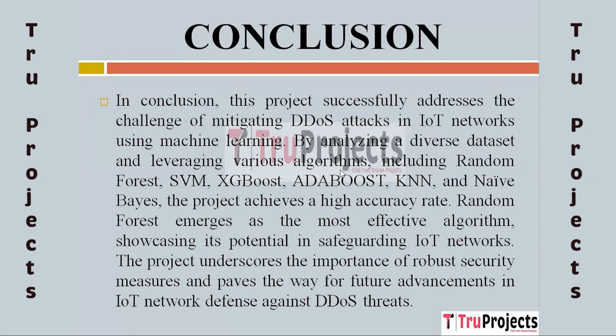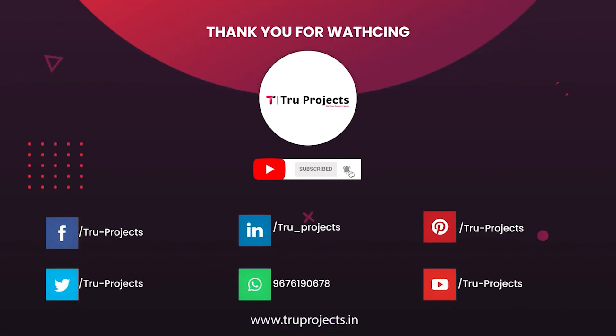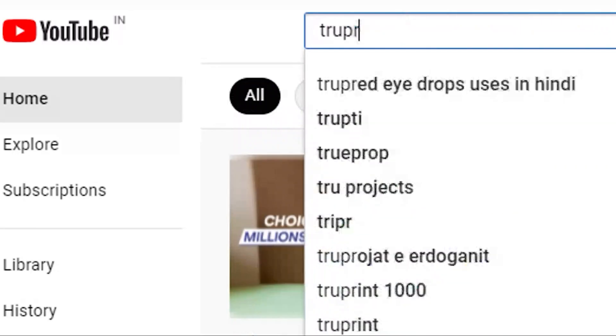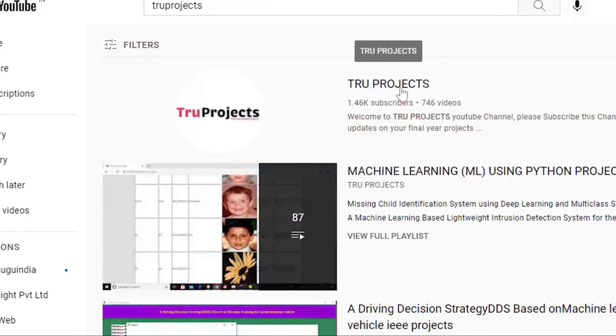In conclusion, this project effectively uses machine learning to address the problem of preventing DDoS attacks in IoT networks. The project achieves a high accuracy rate by analyzing a wide range of datasets and utilizing multiple techniques including Random Forest, SVM, XGBoost, AdaBoost, KNN, and Naive Bayes. As the most successful algorithm, Random Forest demonstrates its potential for protecting IoT networks. The project highlights the value of strong security protocols and paves the way for further development of IoT network defense against DDoS threats. For more projects, please visit our website www.trueprojects.in and subscribe to the True Projects YouTube channel.